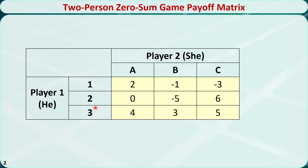In this example, player 1 must choose one of three strategies: 1, 2, and 3. Simultaneously, player 2 must choose one of three strategies: A, B, and C. If player 1 chooses strategy 1 and player 2 chooses strategy A, then player 1 will win $2 and player 2 will lose $2. If player 1 chooses strategy 1 and player 2 chooses strategy B, then player 1 will lose $1 and player 2 will win $1, and so on. This matrix is called the payoff matrix or reward matrix. It only shows the payoffs of player 1; the payoff of player 2 in each cell is just the opposite of the payoff of player 1, so we simply omitted it in this matrix.